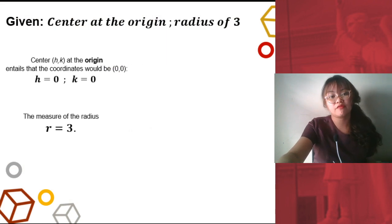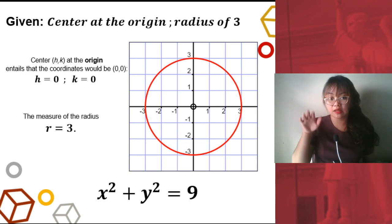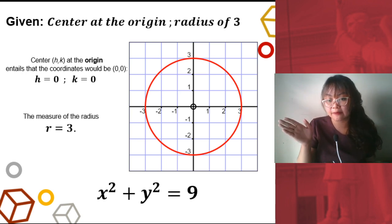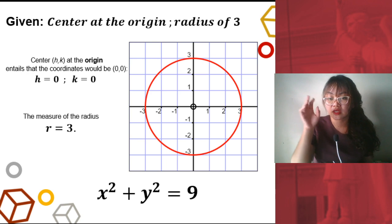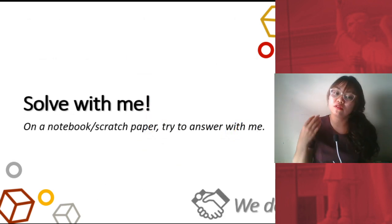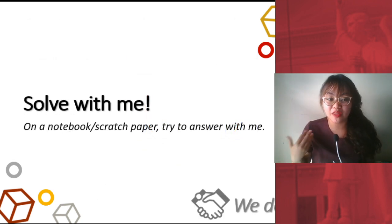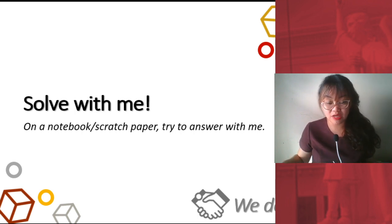Our equation is x squared plus y squared equals 9. This is how our circle would look: the center is at the origin and the measure of the radius is 3. Now for this next portion, you would be solving with me — on a notebook, scratch paper, or anywhere. I want you to answer with me.